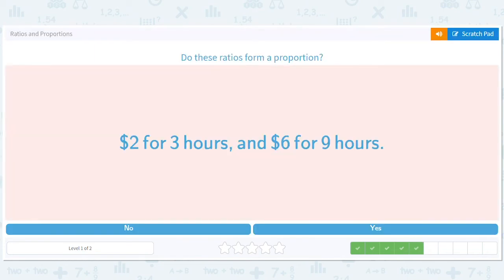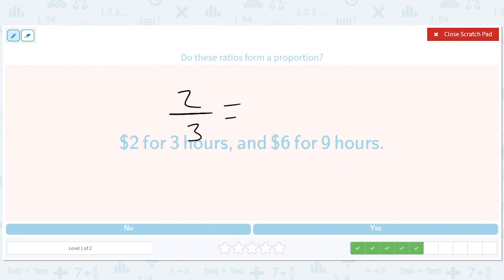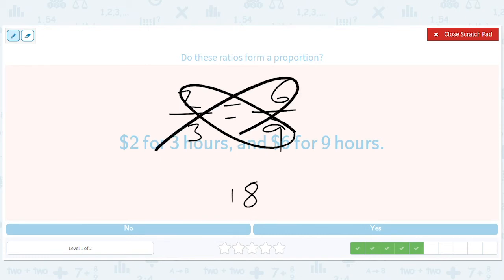Two dollars for three hours or six dollars for nine hours. Let's cross multiply and realize, hey, they're the same.